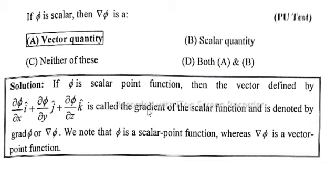is called the gradient of a scalar point function and is denoted by grad phi or del phi. We note that phi is a scalar point function, whereas gradient phi is a vector point function. So option A is correct: vector quantity.